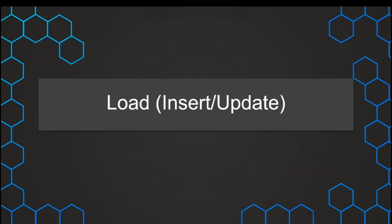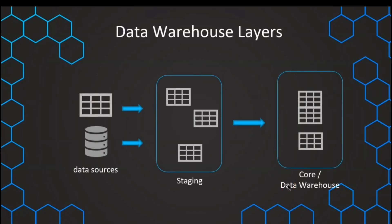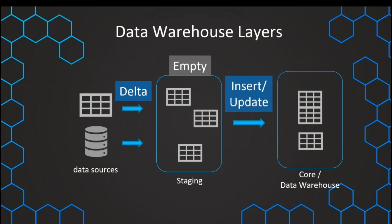Now that we've walked through the extract process, we want to see how the data can be loaded. Once we have run our ETL and want to run it again, the staging layer is empty because we always empty the staging layer after each run. We then run a delta — we have stored the maximum value of the delta column and know what is new data in our source systems. That data is filtered and extracted into the staging environment, and then from the staging environment all of the data is pushed with the transformations into the core layer. We use insert/update for that.